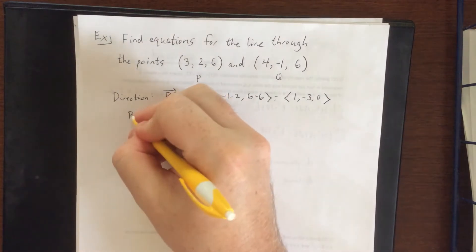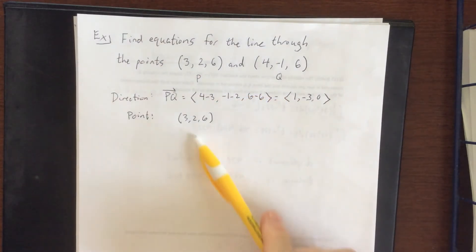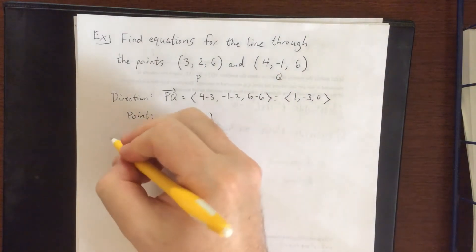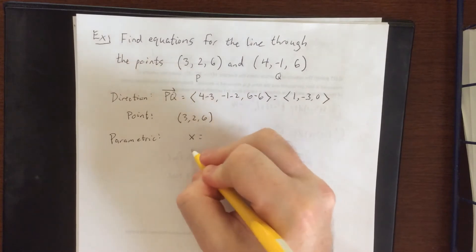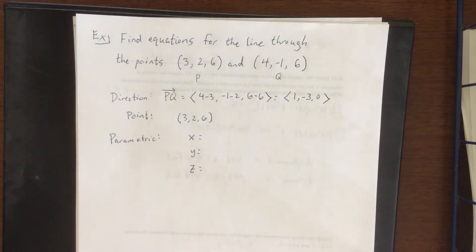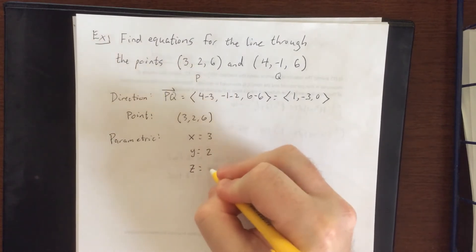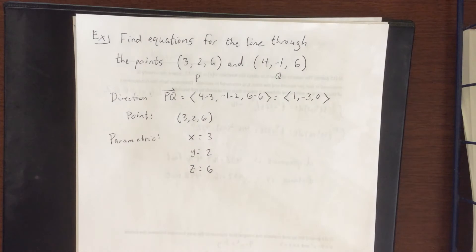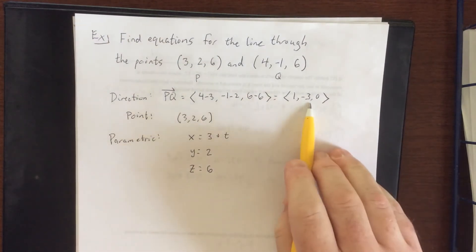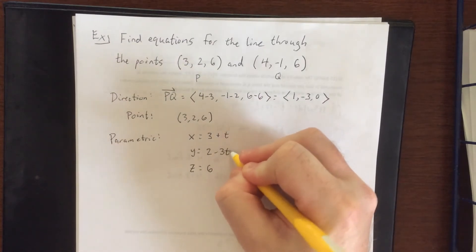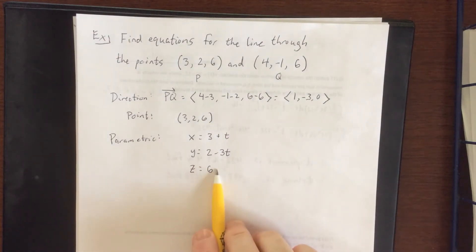For the point, we're allowed to select either one — I'll go with the first point (3, 2, 6). In parametric form: x = 3 + 1t, y = 2 − 3t, and z = 6 + 0t, so z just equals 6 with no t term. Since the z-component of the direction vector is 0, we simply don't write that term.